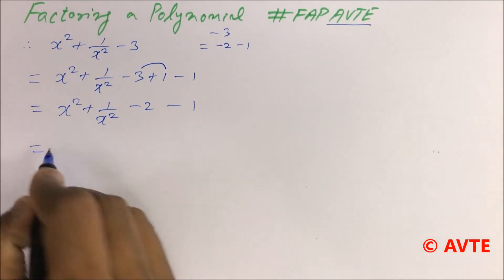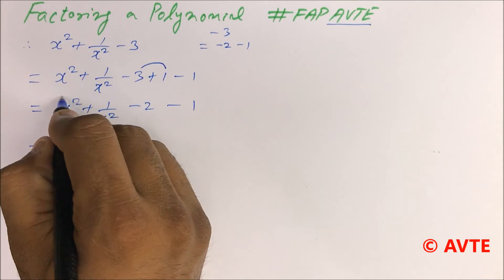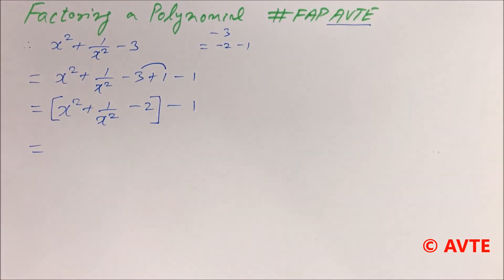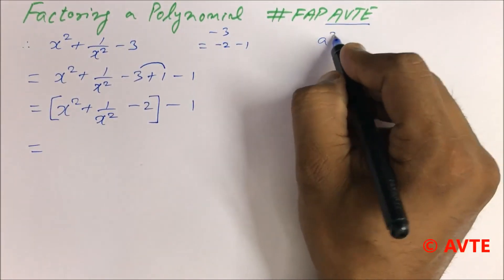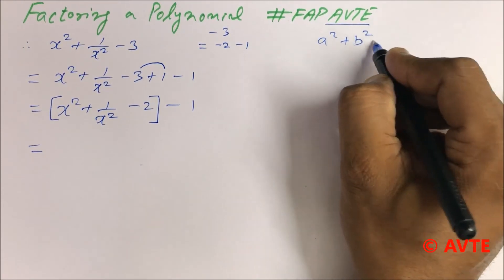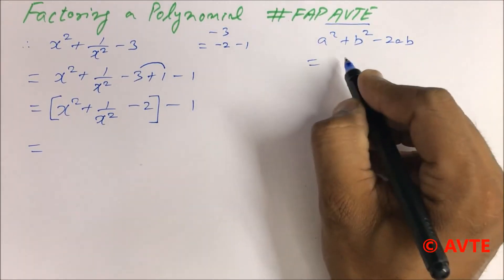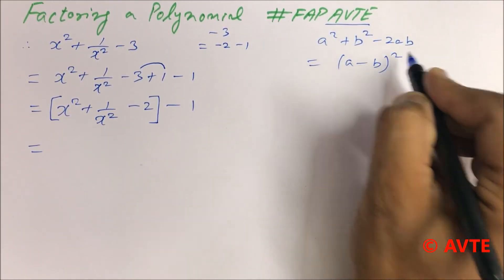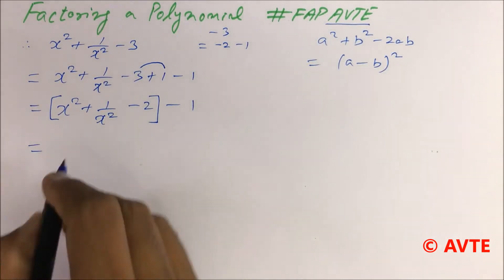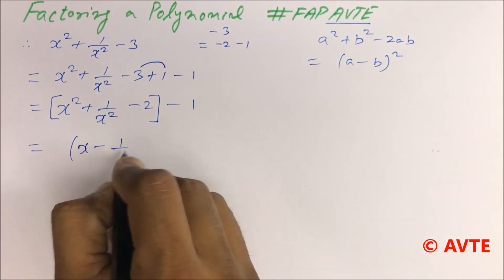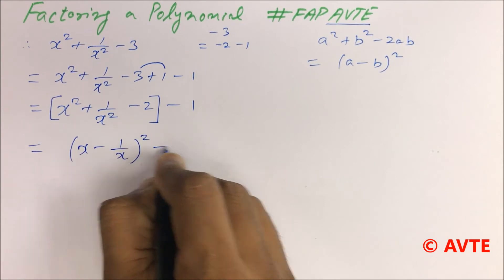You know that this becomes applying a square plus b square minus 2ab, that is a minus b whole square. So it becomes x minus 1 by x whole square minus 1 square.